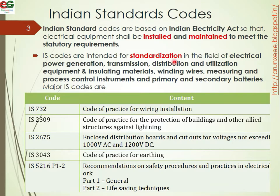IS codes are intended for standardization in the field of electrical power generation. In all fields we need standardization — for power generation, transmission, and distribution. For example, we are using a frequency of 50Hz. The standardization covers rules for electrical power generation, transmission, distribution, utilization of equipment, wiring, measuring and control instrumentation, primary and secondary batteries, etc.